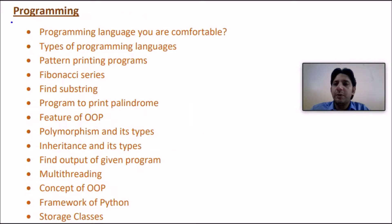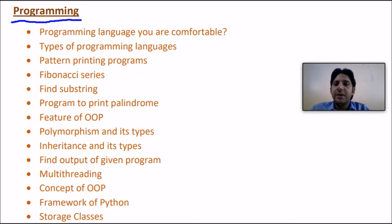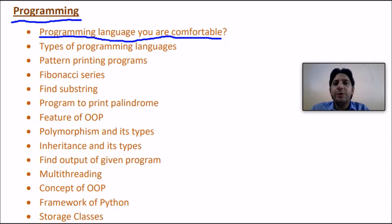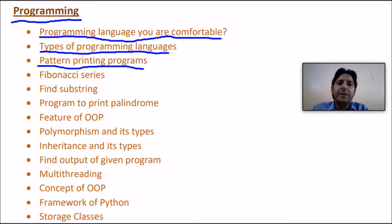Now discussing programming questions asked by technical companies like SAP. The company may ask which programming language you are comfortable with — C, C++, Java, or Python — and then ask questions from that language. They may ask about types of programming languages, pattern printing programs where you have to print star patterns. Printing a star pattern in linear time complexity is a common pet question.